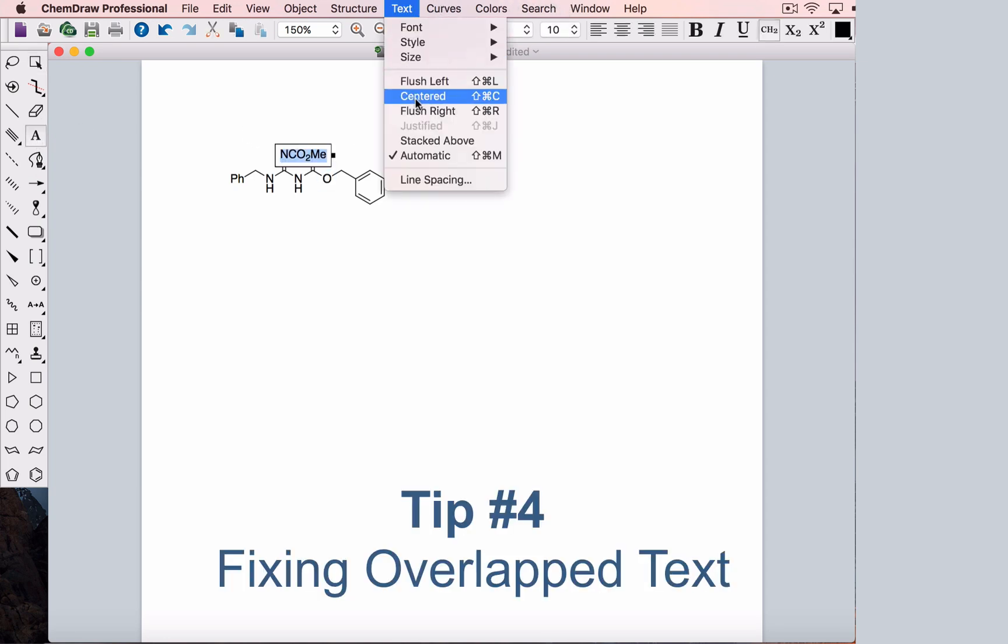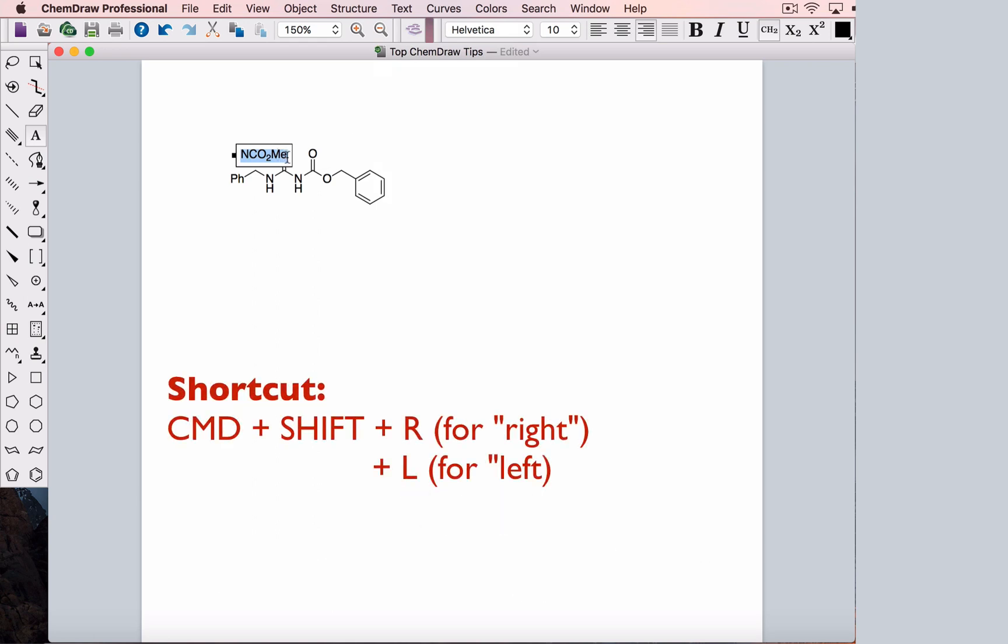Visit the text menu and select flush right to anchor it at the right side. But you'll notice our group looks like it's connected at methyl rather than nitrogen. What we need to do is type the label in reverse, beginning with the ME.